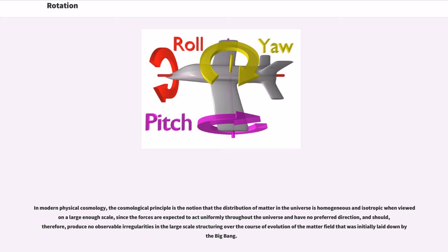The laws of physics are currently believed to be invariant under any fixed rotation. In modern physical cosmology, the cosmological principle is the notion that the distribution of matter in the universe is homogeneous and isotropic when viewed on a large enough scale, since the forces are expected to act uniformly throughout the universe and have no preferred direction, and should therefore produce no observable irregularities in the large scale structuring over the course of evolution of the matter field that was initially laid down by the Big Bang.